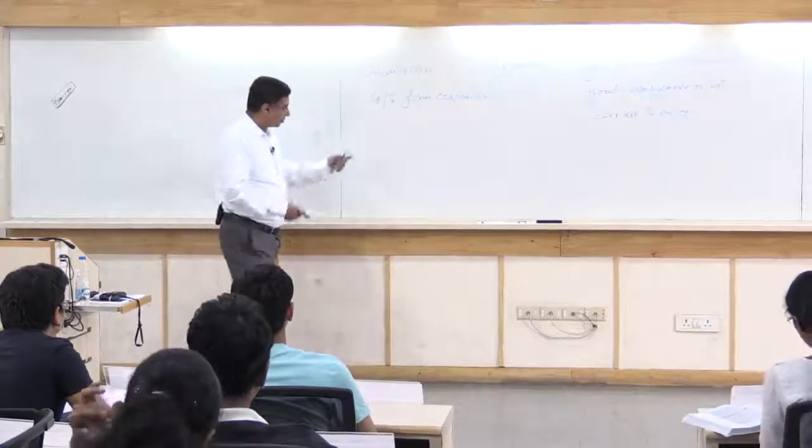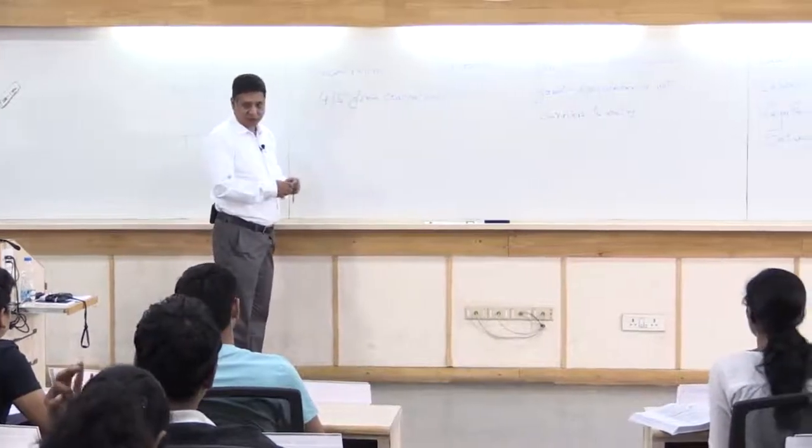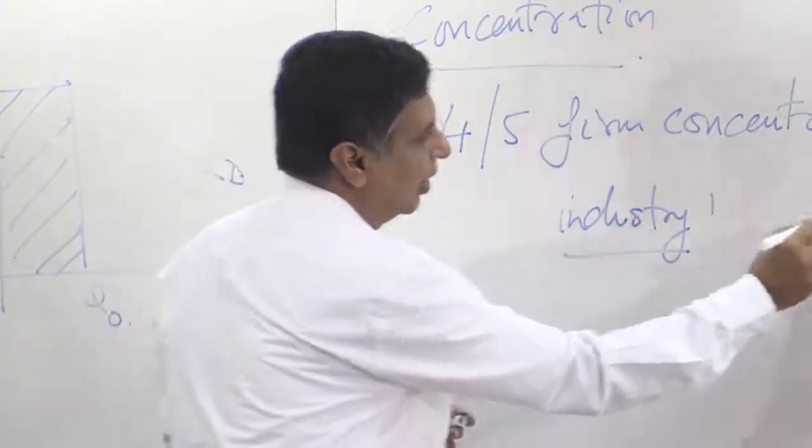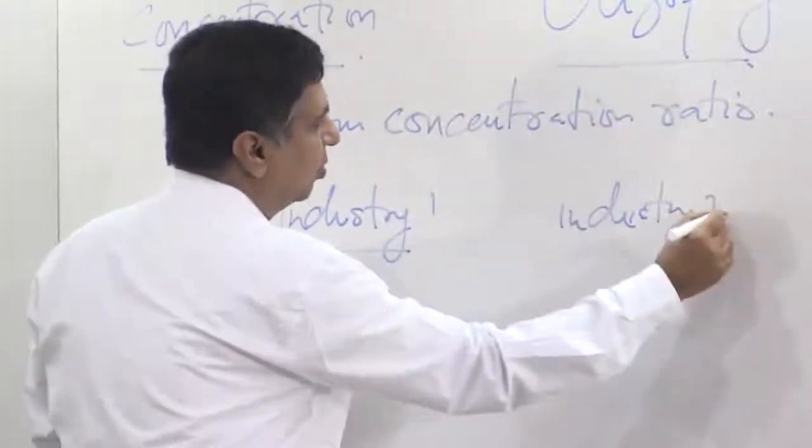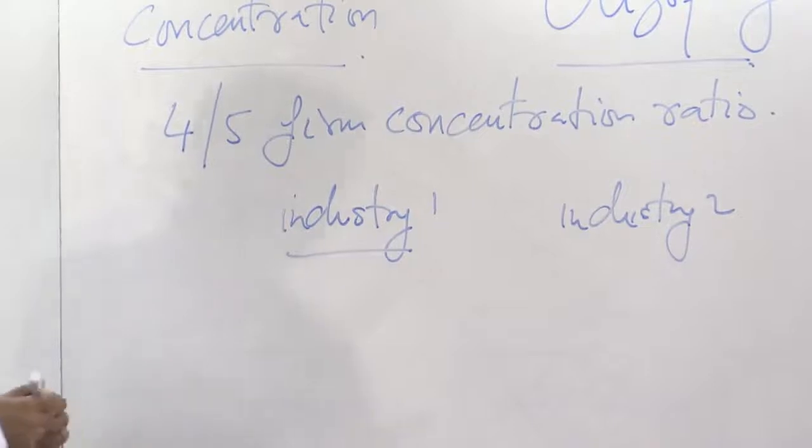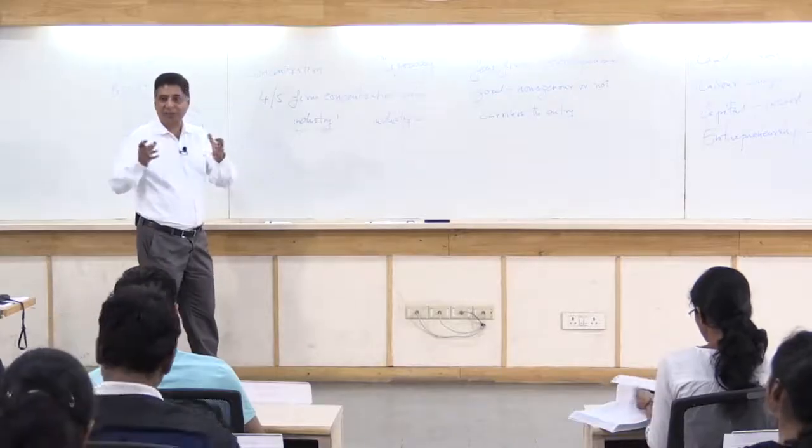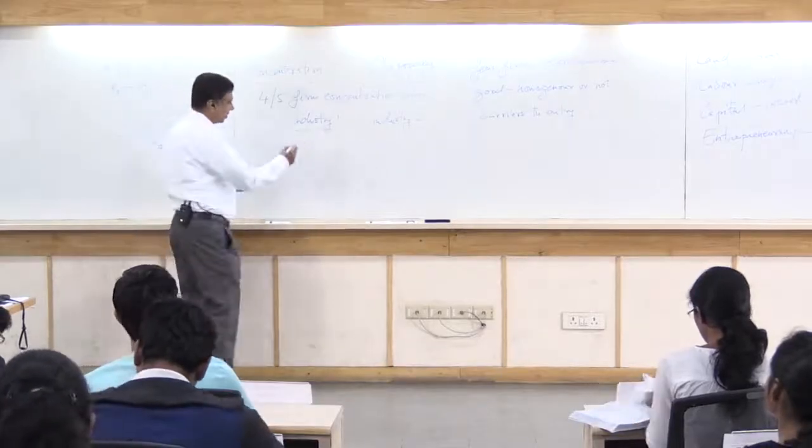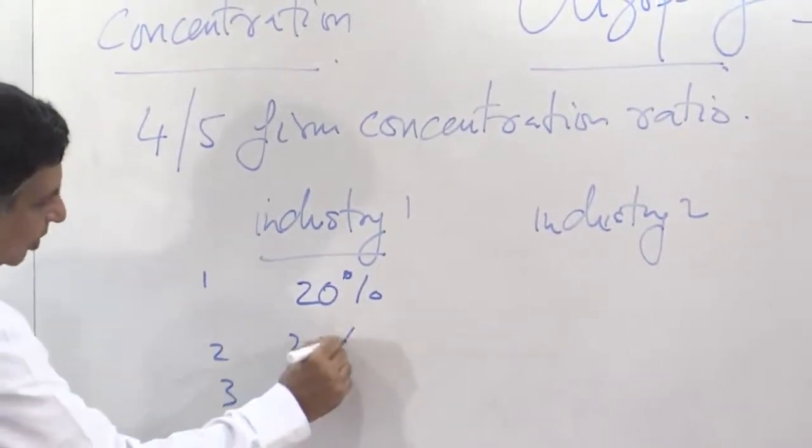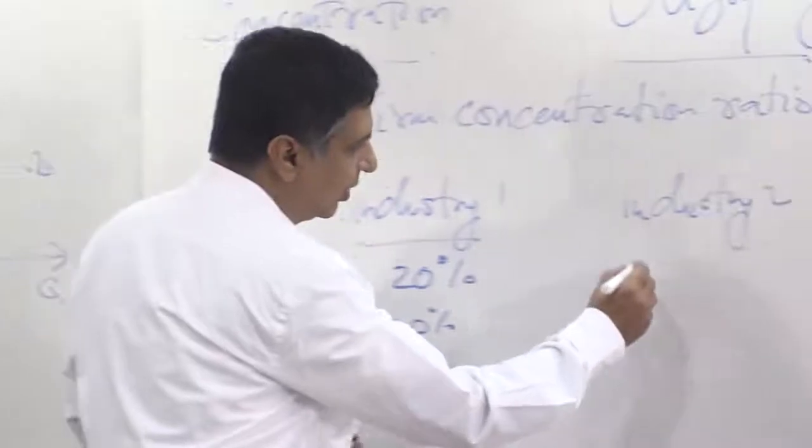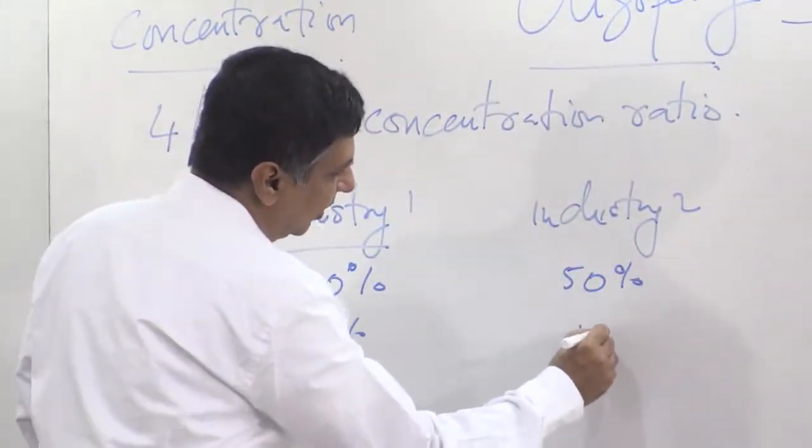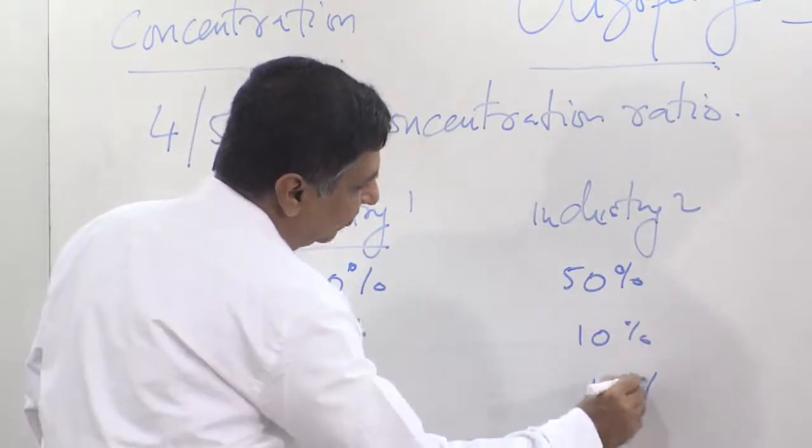Suppose we are considering the 4 firm concentration ratio and there are industry 1 and industry 2. Suppose the market share in industry 1, the top 4 firms enjoy 80 percent of the total market share. Firm 1, 2, 3, 4 everybody has 20 percent.